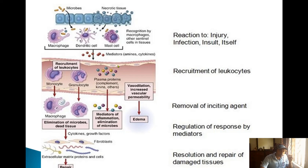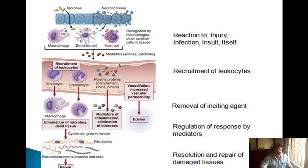Because of histamine, the blood vessel underneath swells, and the permeability of the blood vessel increases — there is vasodilation. Due to vasodilation, smaller blood cells try to go outside the blood vessel by penetrating through its wall. Because of increased permeability, there will be swelling as everything tries to move outward.